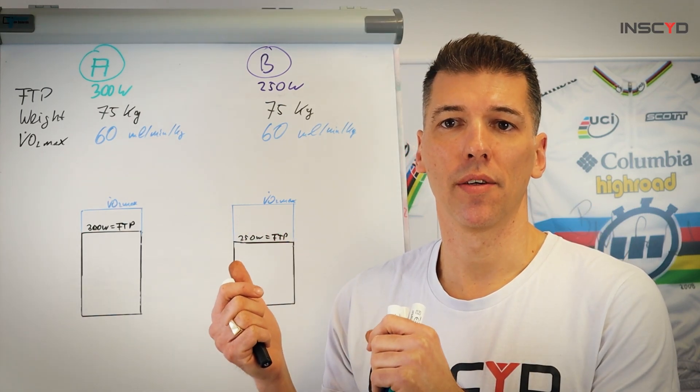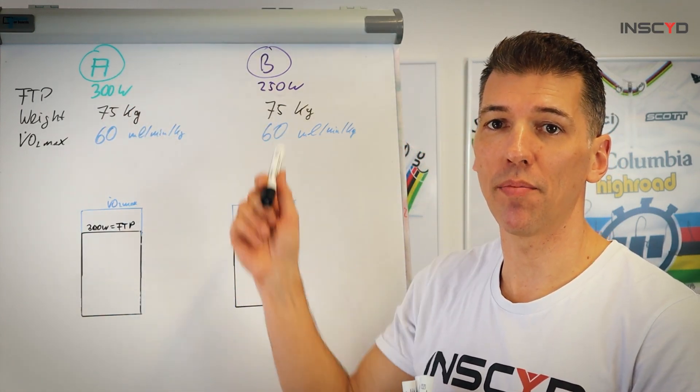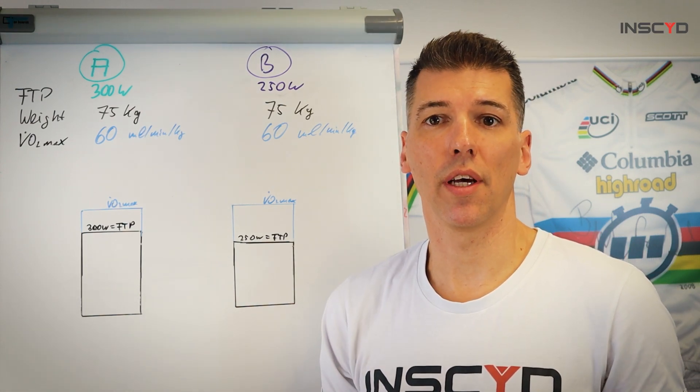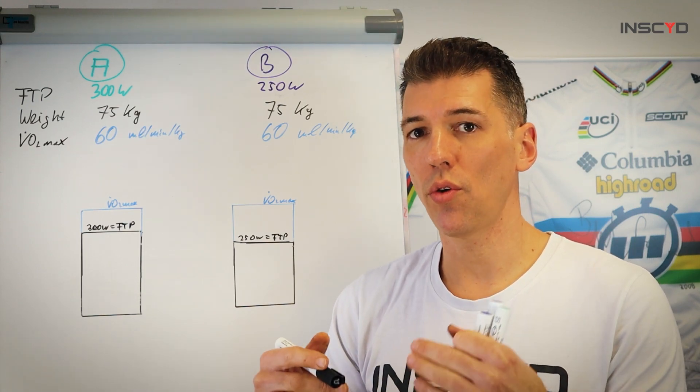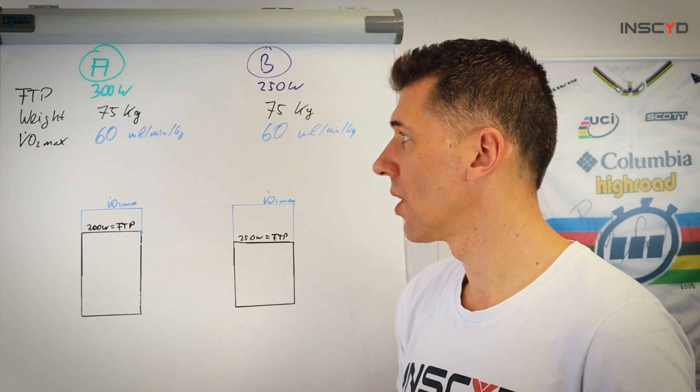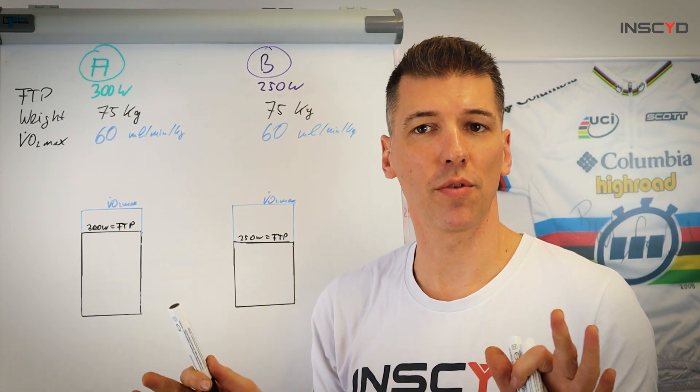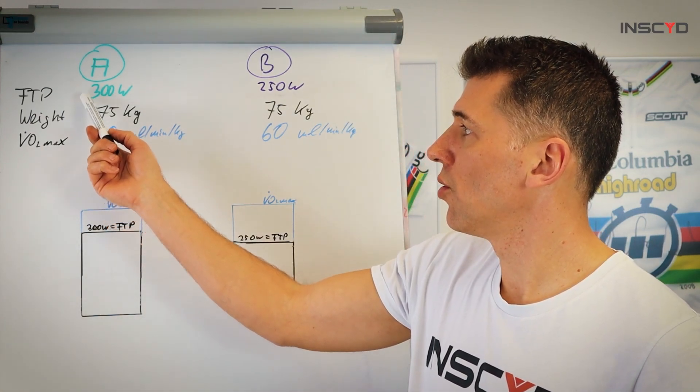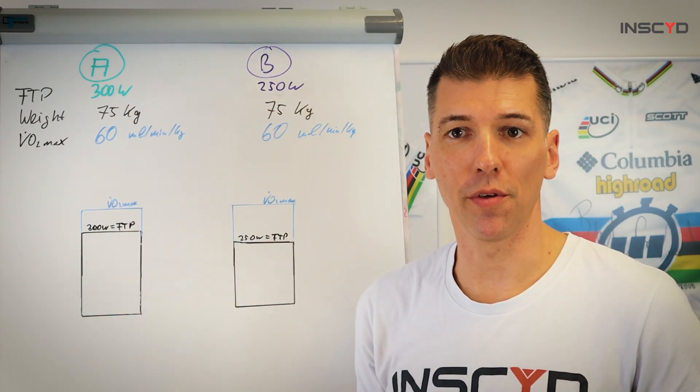Let's have a look at a very typical example of two athletes here, athlete A and athlete B, with slightly different training status, slightly different physiology, to understand why even though you have individual training zones, you don't see the progress in your VO2max intervals. So imagine you have two athletes here, same body weight, just for the sake of simplicity, and let's assume those have different FTP values. So athlete A has an FTP of 300 watts, athlete B of 250 watts.